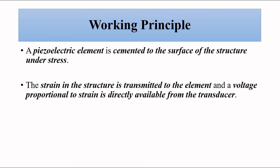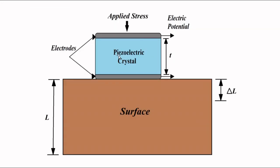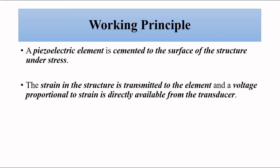When this happens, the strain produced in the structure because of the applied stress or pressure is transmitted to the piezoelectric crystal element, and it generates an electric potential directly proportional to the resultant strain. That is the reason why this piezoelectric crystal is fixed on the object where the strain is to be measured, and we get a direct voltage readout which is proportional to the resultant strain produced.